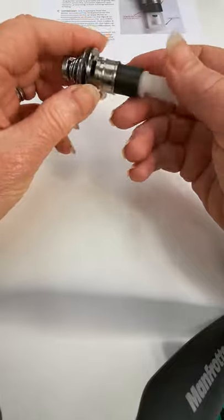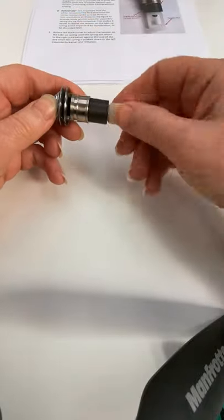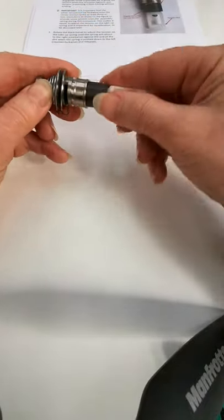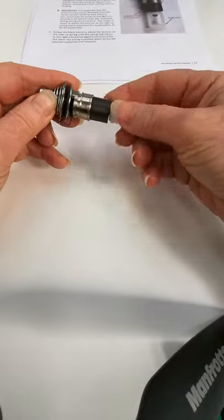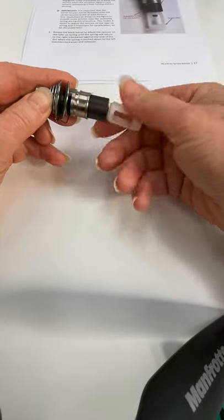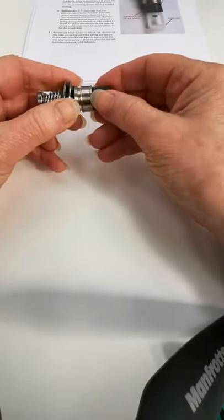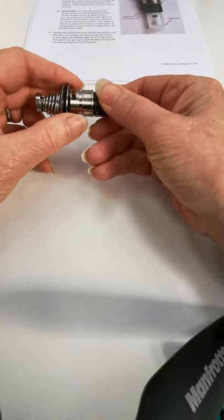So to replace the spring what you're going to do is undo the barrel, the white plastic barrel, and then just take this unit apart.